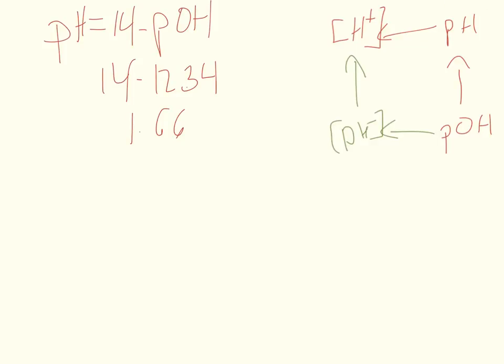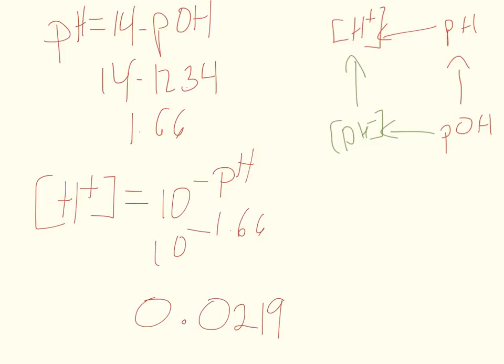Okay, the next thing I need to do is figure out how to get from pH to H plus. The concentration of H plus is just 10 to the negative of the pH, or 10 to the negative 1.66, which is 0.0219.